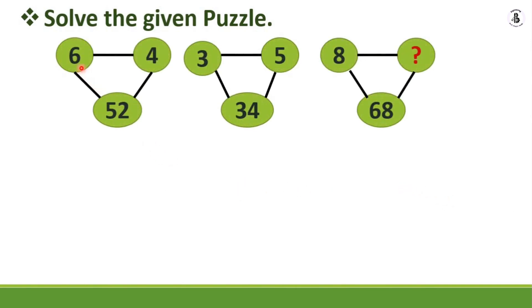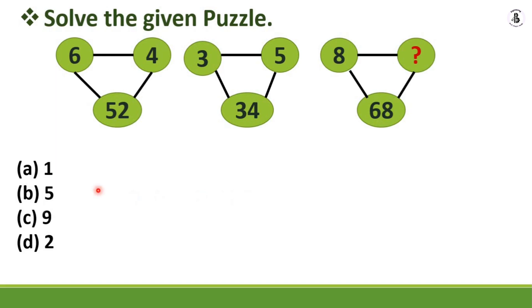For the next puzzle: given the pairs 6, 4 → 52 and 3, 5 → 34 and 8, ? → 68, which number satisfies the condition? The options are: A) 1, B) 5, C) 9, D) 2. Your time starts now.